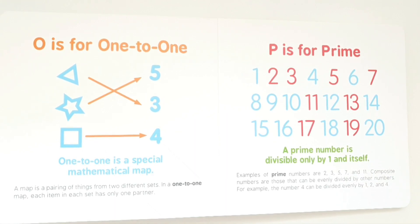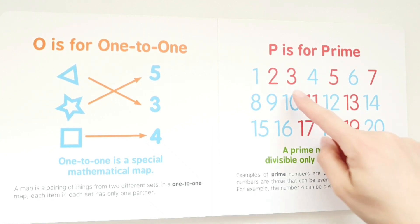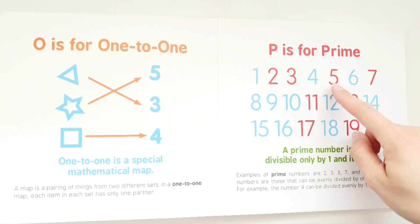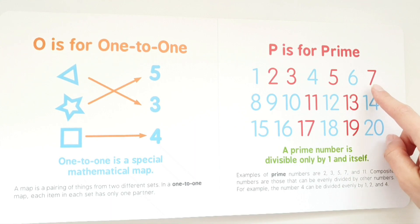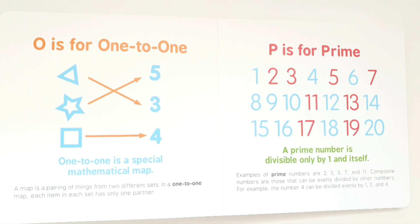P is for prime. A prime number is divisible only by one and itself. Examples of prime numbers are 2, 3, 5, 7, and 11. Composite numbers are those that can be evenly divided by other numbers. For example, the number 4 can be divided evenly by 1, 2, and 4.